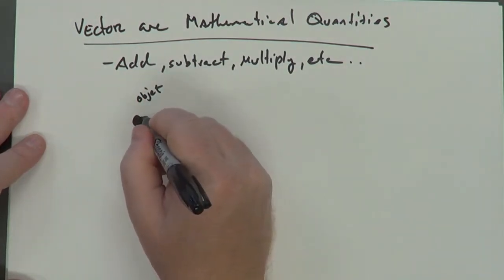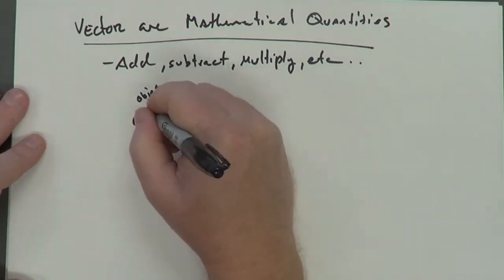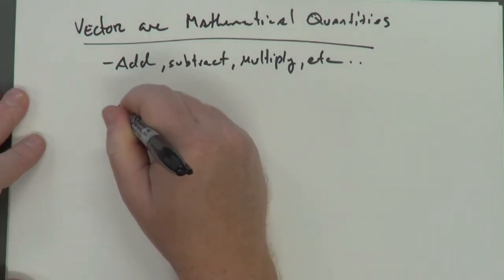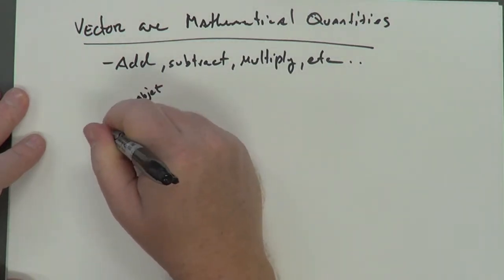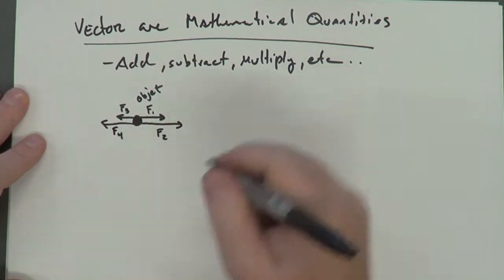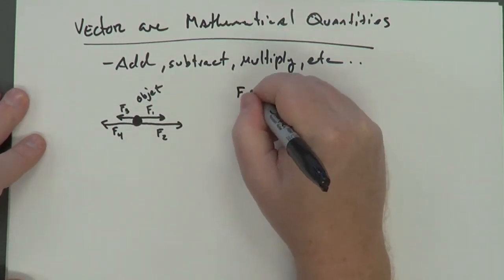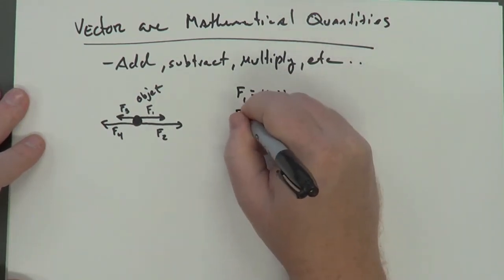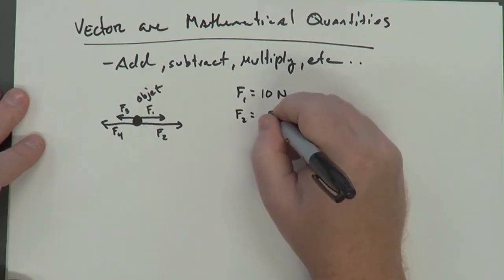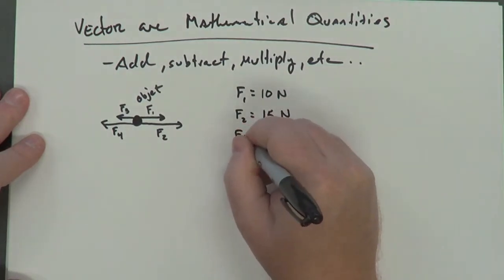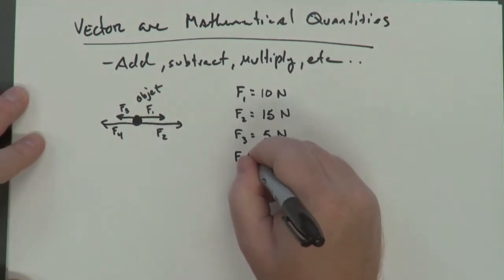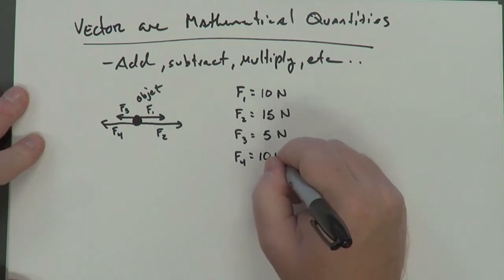And let's say there's a force pushing him this way, and we'll call that F1. There's another force pushing him this way, we'll call F2. And there's another force, which we'll call F4. So let's say you actually measured those forces, and you found that F1 is, I don't know, 10 newtons. F2 is, let's say, 15 newtons. F3 is 5 newtons. And maybe F4 is 10 newtons.